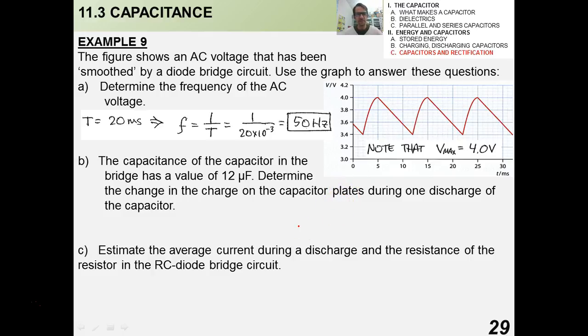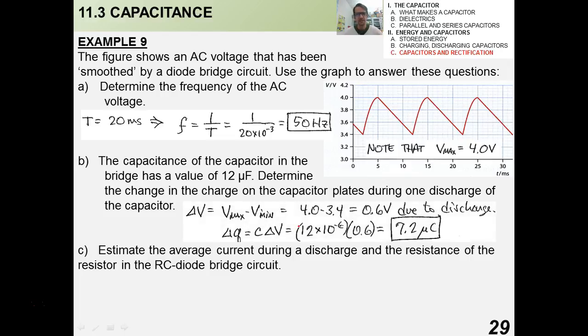Now, the capacitance of the capacitor in the bridge has a value of 12 microfarads. Determine the change in the charge in the capacitor plates during one discharge of the capacitor. To do that, we have to figure out the change in the potential difference. Remember, they're asking the change in the charge of the capacitor plates. And that's going to be V max minus V min. We know that V max is 4. For V min, all you do, you simply just read the minimum, the local minimum, of this function, which is 3.4, and it's 0.6 volts. Now, once we know that, we would say that delta Q equals C delta V from our old capacitance equation. And we get that the change in charge would be 7.2 microcoulombs. Pretty clever, huh?